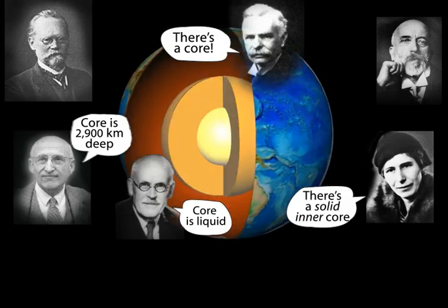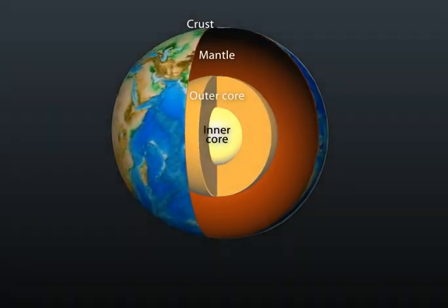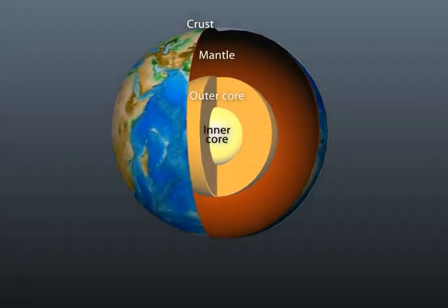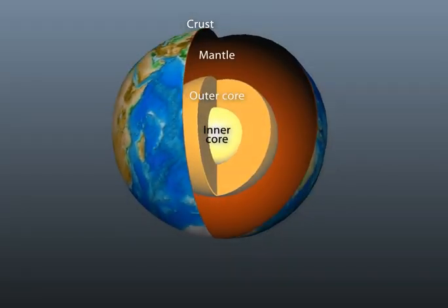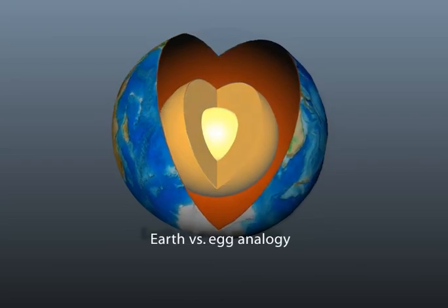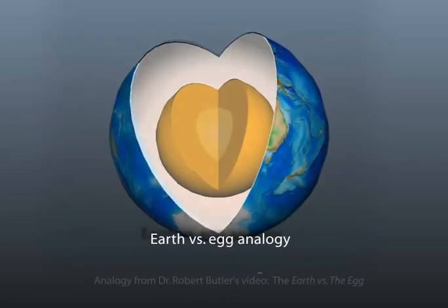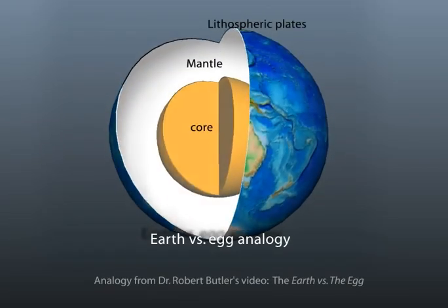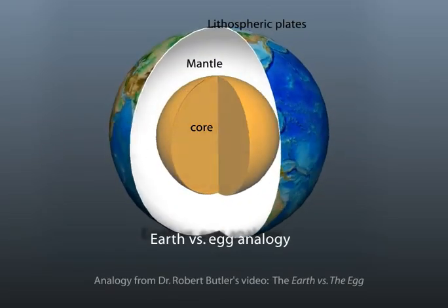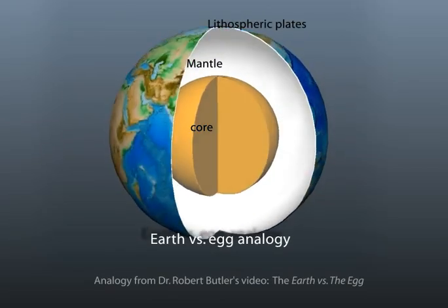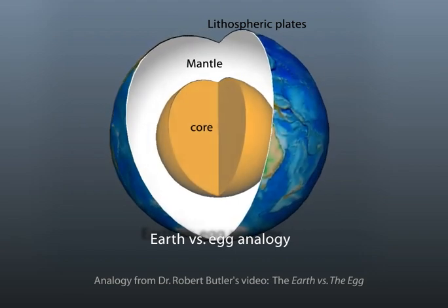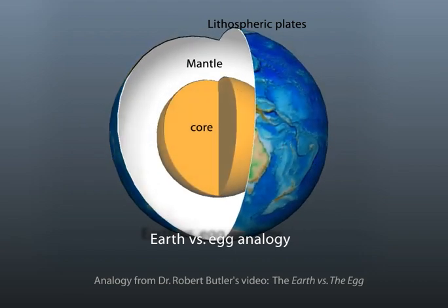They thus determined that the Earth has three layers based on chemical composition: crust, mantle, and core. As an analogy for relative scale, these layers can be compared to an egg, with the shell representing the outermost brittle layer, the white representing the mantle, and the yolk representing the core.